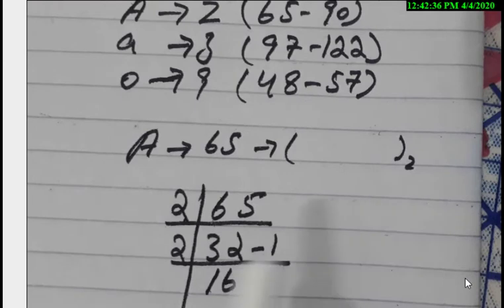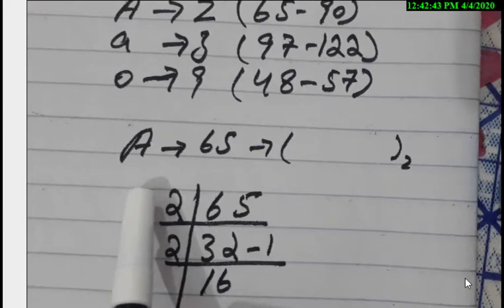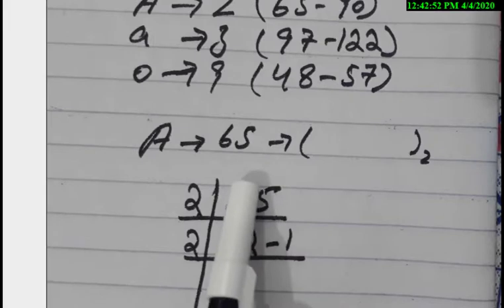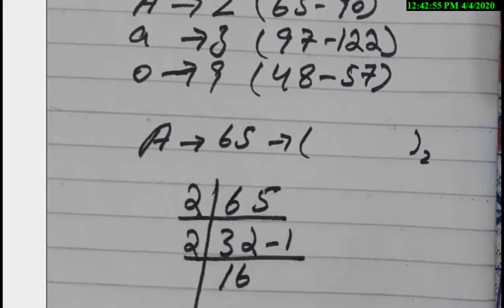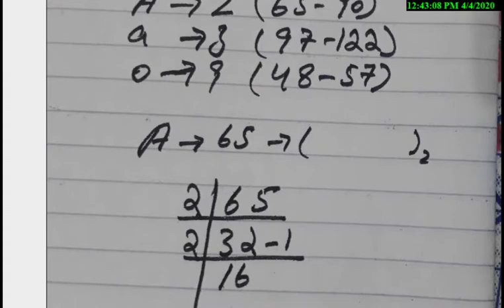So if we want to convert the decimal code 65 into binary, we need to learn this method. To convert any number into binary, we divide it by 2 repeatedly. So 65 divided by 2 gives 32 with remainder 1. Then 32 divided by 2 gives 16 with remainder 0. Then 16 divided by 2 gives 8 with remainder 0.